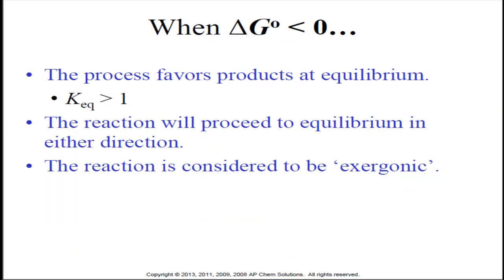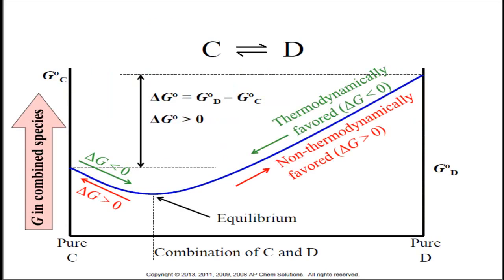When delta G is less than zero, the process favors the products at equilibrium, so KEQ would be greater than one. The reaction is going to proceed to equilibrium in either direction, and the reaction is said to be exergonic — exergonic means that delta G is less than zero. In a reaction where the calculated delta G value would be positive, we might conclude the reaction is not thermodynamically favored; however, the reaction is thermodynamically favored between the point where there is 100% reactants and the equilibrium position. Delta G is the change in free energy moving from all reactants to all products, but here we are proceeding from all reactants to equilibrium — for that change we move down the slope, giving us a negative value for delta G. So a positive delta G value means we have mostly reactants at equilibrium; it does not mean we have no products at equilibrium.